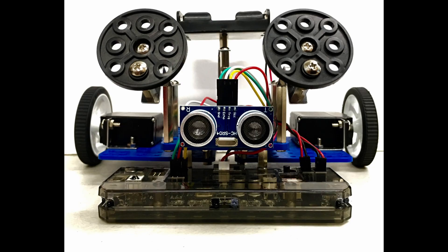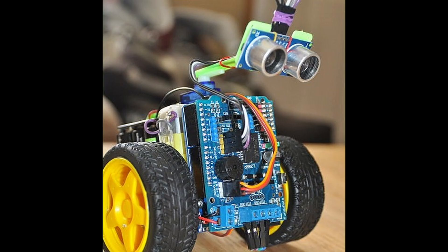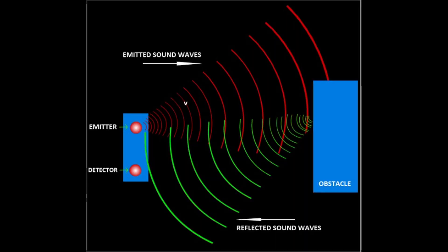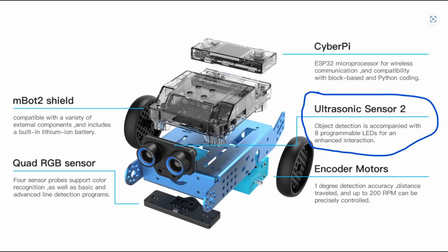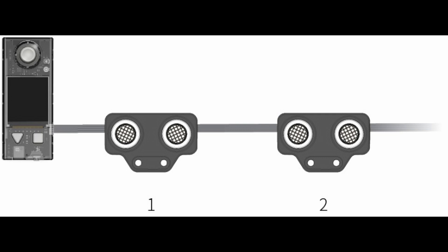Ultrasonic sensors are used primarily as proximity sensors. They can be found in automobile self-parking technology and anti-collision safety systems. Ultrasonic sensors are also used in robotic obstacle detection systems, as well as manufacturing technology.